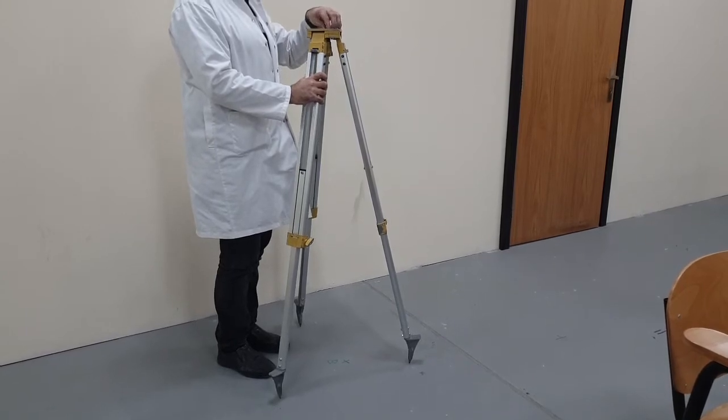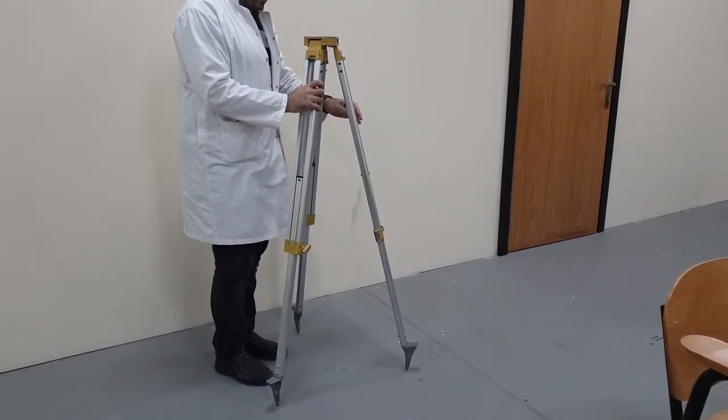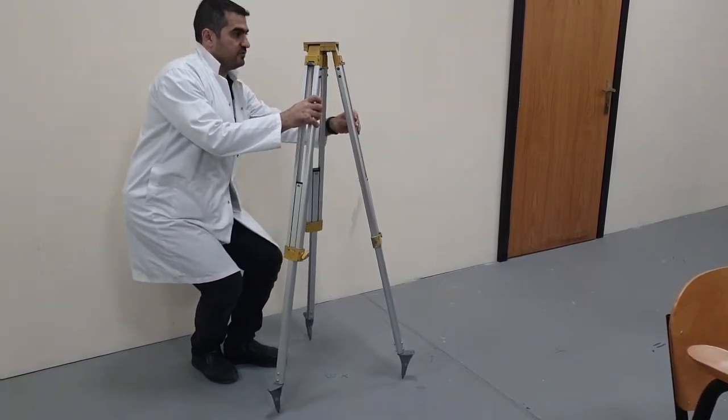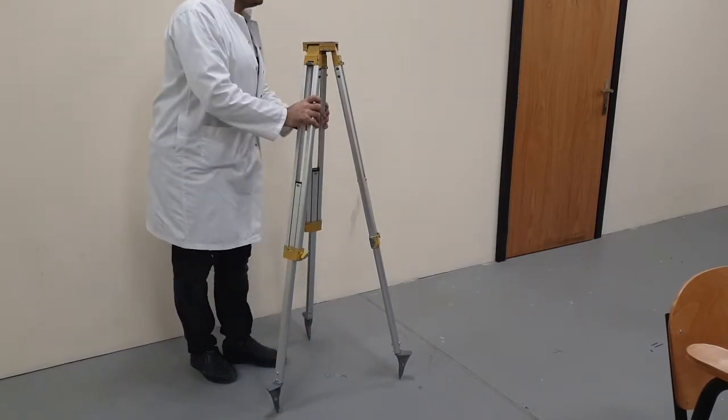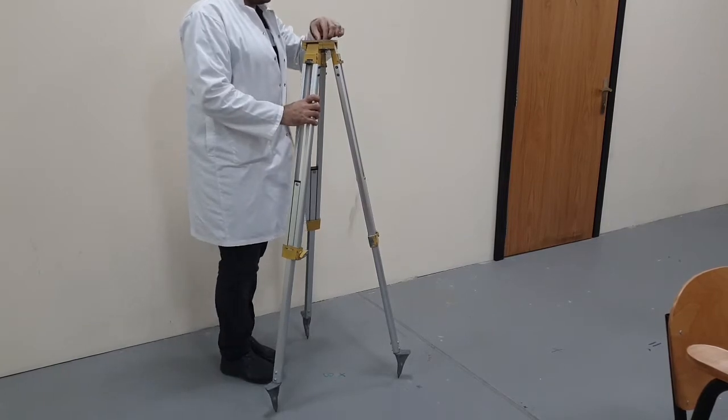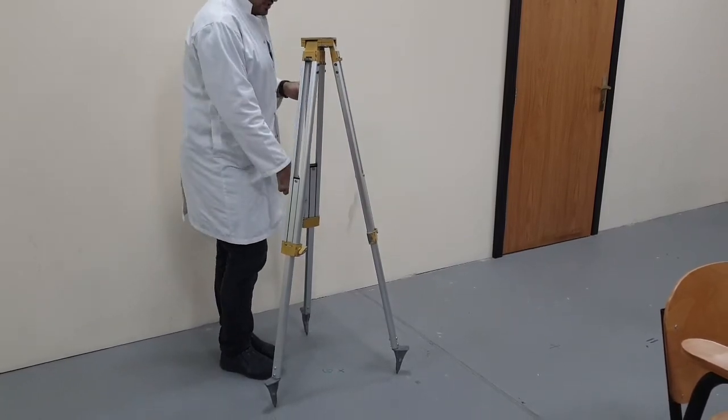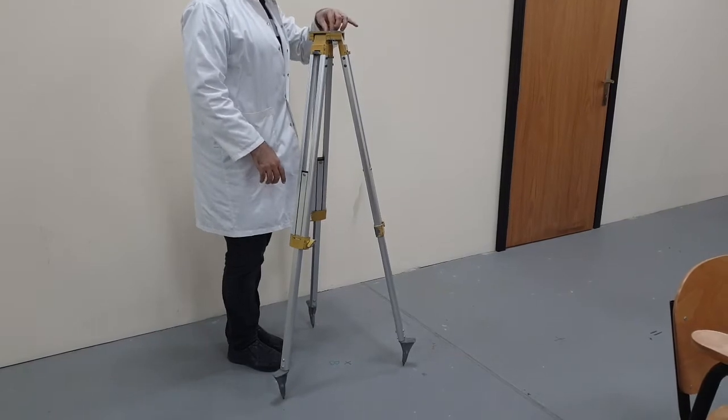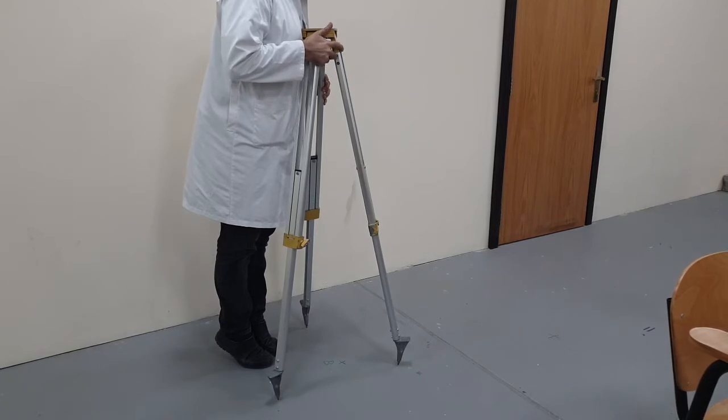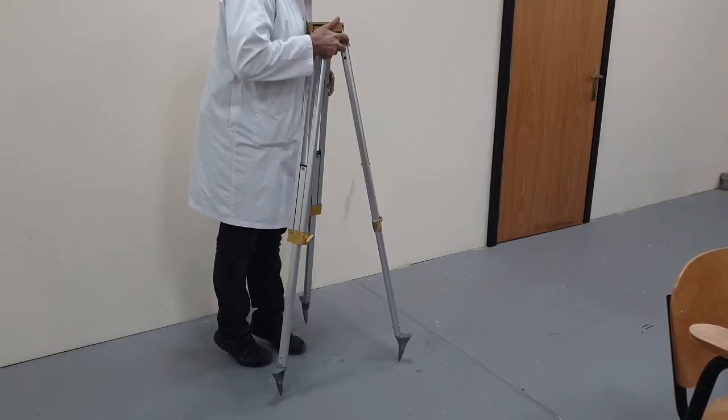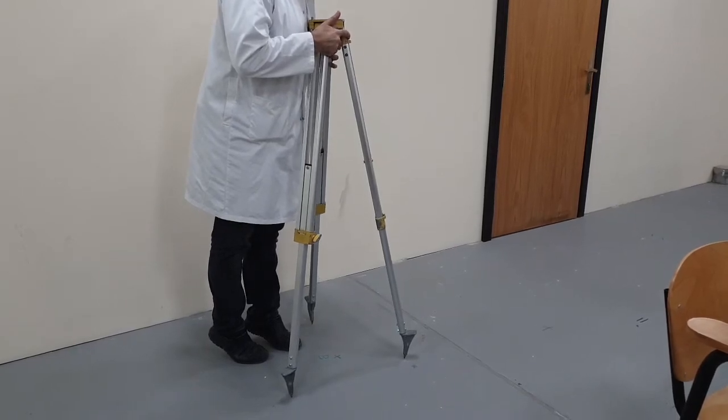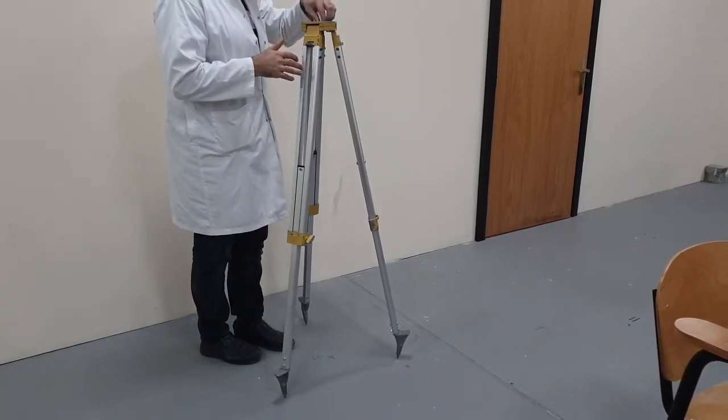Now I need to make sure that this is almost level, at least by eye, because leveling this will make it easier for us to level the digital level lights later on. For the center I can either use a plumb bob to check this point here roughly, or by sight I look down, make sure this is in the center, and I move the whole tripod to the center of the point, at least roughly.